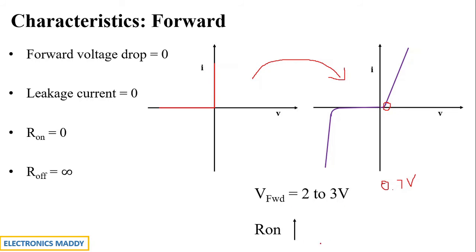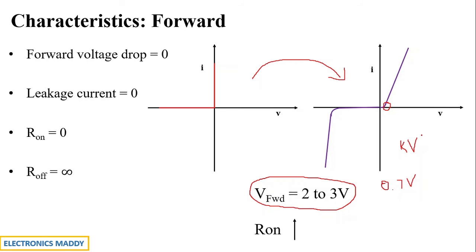You might ask whether the 2 to 3 volt forward drop causes more power loss than a normal diode. While 2 to 3V seems large, power diodes handle voltages in the kilovolt range, making 2 to 3V relatively very small. By contrast, normal diodes handle small voltages where 0.7V is already comparable to that 2-3V drop in a power diode. Structurally, power diodes also have a larger cross-sectional area due to their high power handling capability.